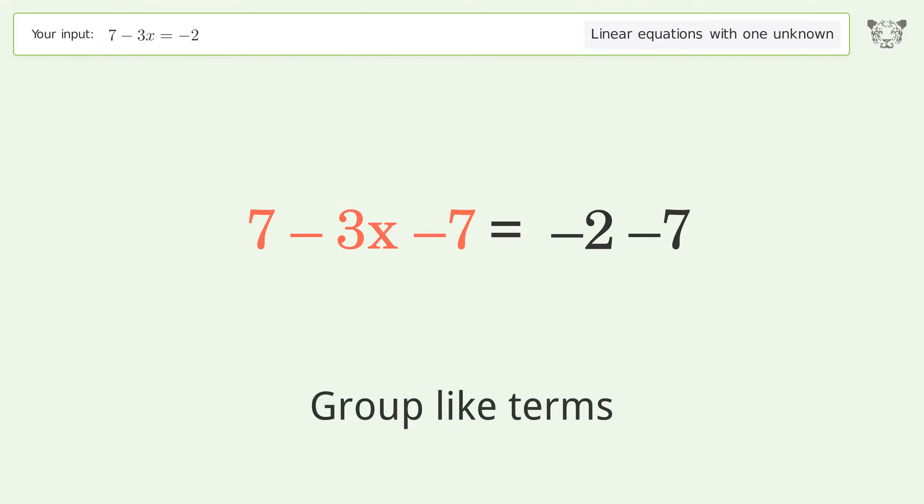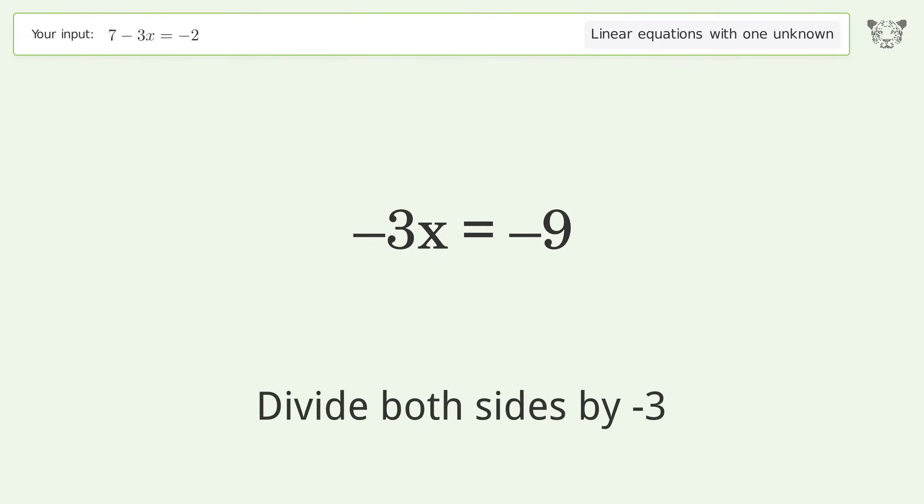Group like terms. Simplify the arithmetic. Isolate the x. Divide both sides by negative 3.